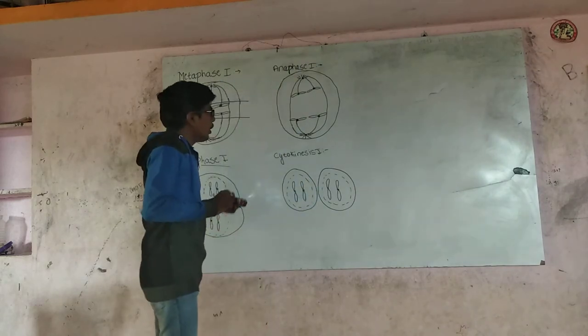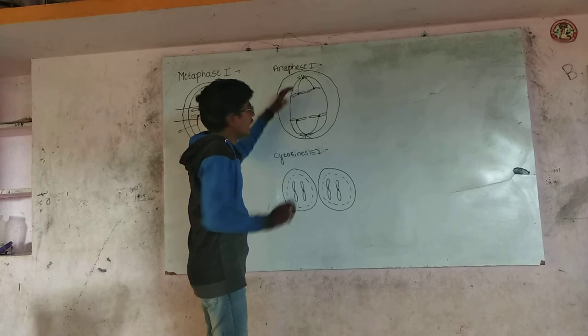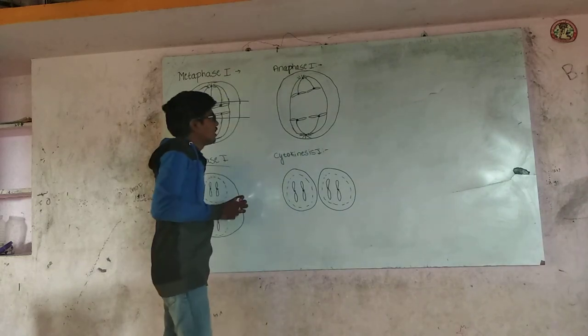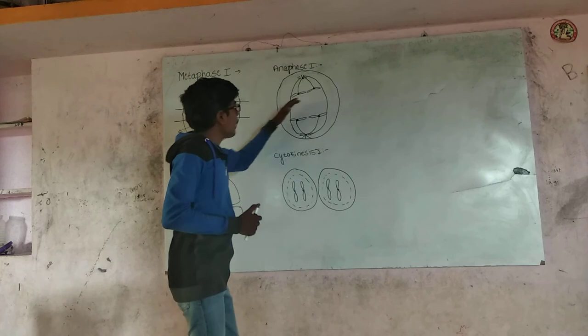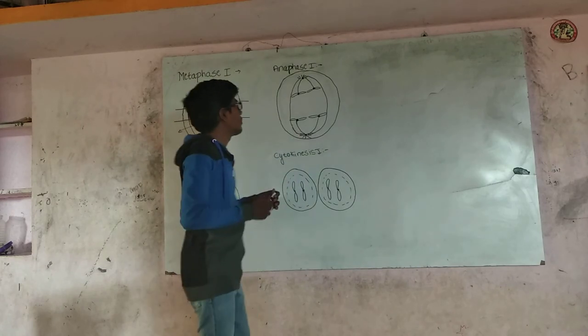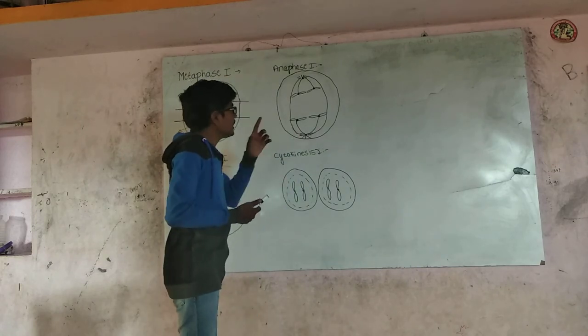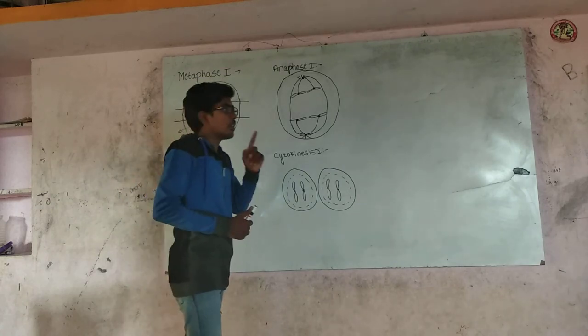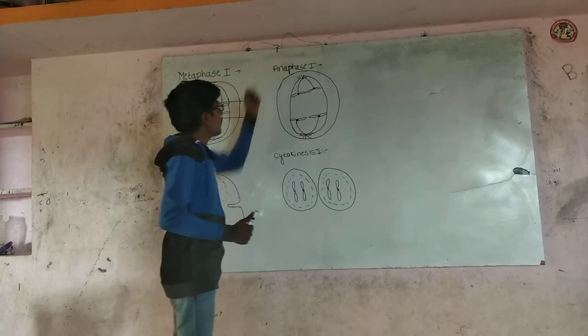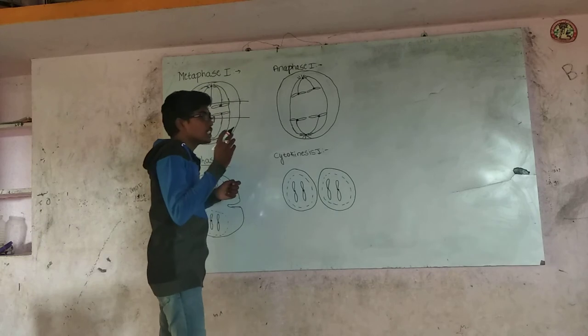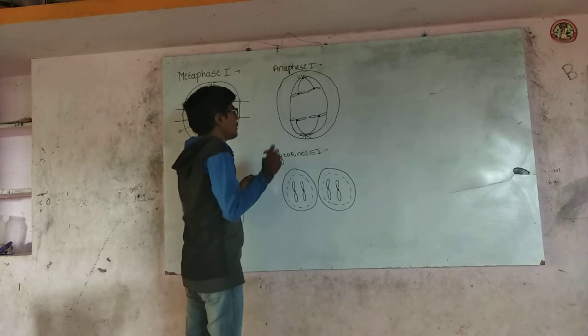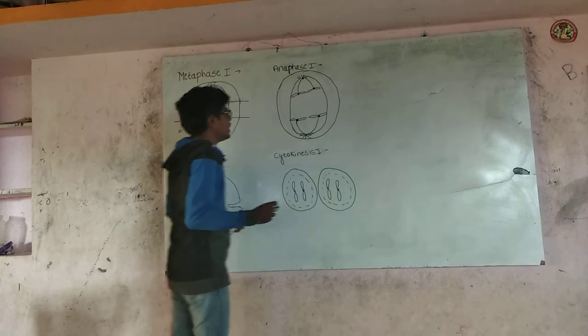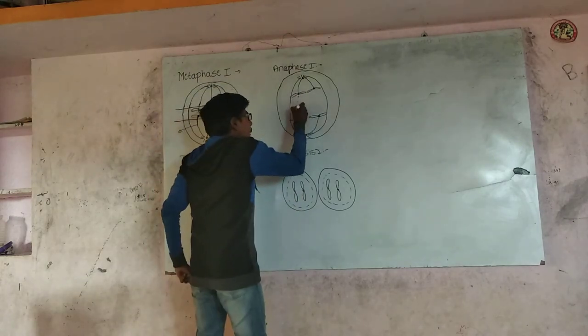Homologous chromosomes separate and move towards the opposite poles. In case of mitosis in Anaphase, there is splitting of the centromere. Then daughter chromosomes move towards the opposite poles and they will form interzonal fiber.